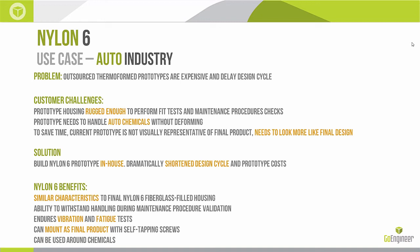By building the Nylon 6 prototype in-house, the design cycle and prototype cycle measures in days rather than weeks — a part that large probably takes less than a hundred hours, running lights-out 24 hours a day. The benefits they saw included similar characteristics to the final Nylon 6 fiberglass-filled injection-molded housing, ability to withstand handling during maintenance procedures, and the ability to endure vibration and fatigue tests. Without that, you'd have to wait until tooling and final products are done to begin lifecycle testing.